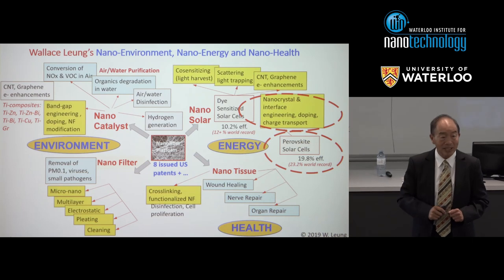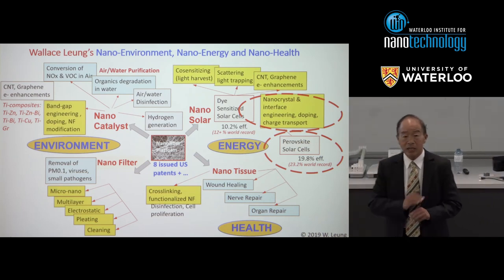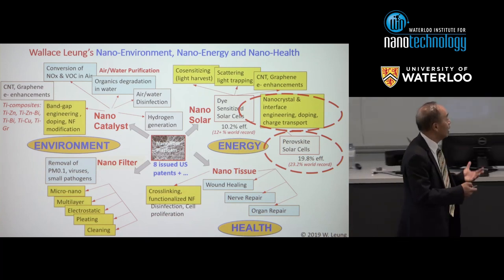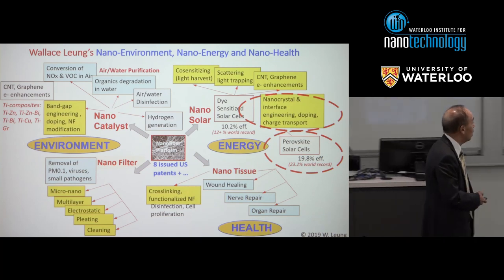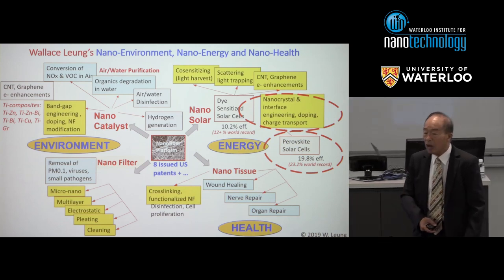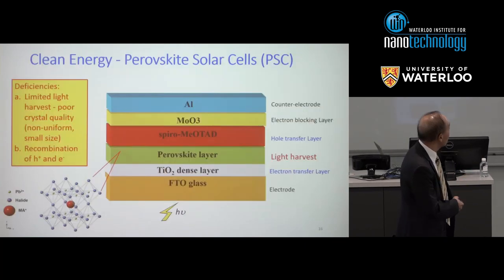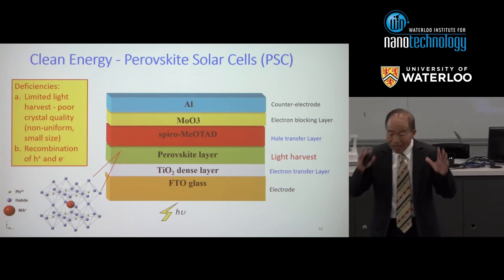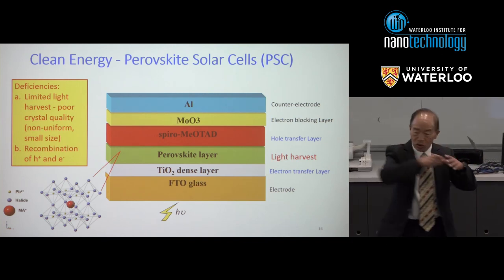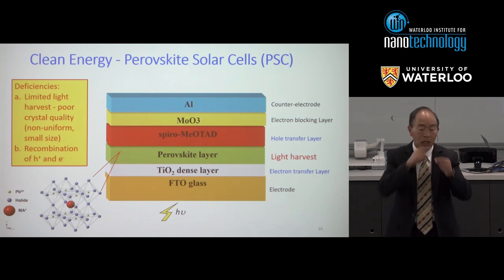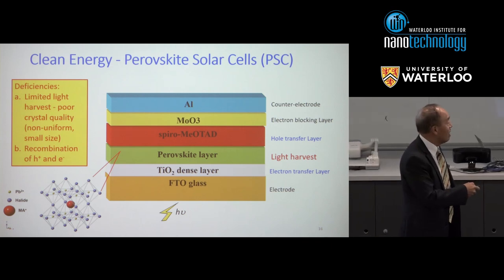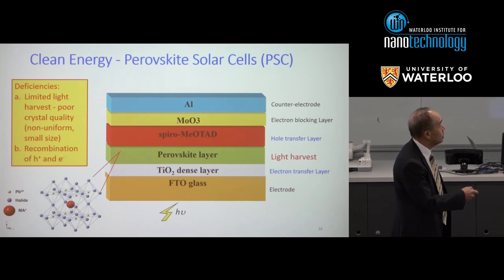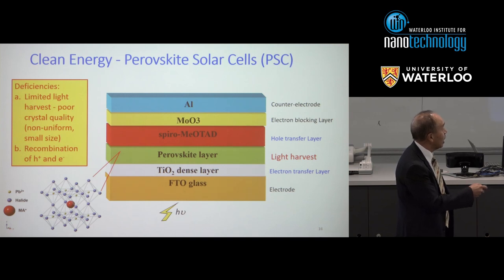Let's move on to the perovskite solar cell. In the past five years it has been the most actively worked on because it has very high performance — today about 22%, and in tandem arrangement up to 24%, competing with amorphous silicon. The perovskite itself is complicated: it has a methyl ammonium organic component plus an octahedral structure with lead and six halide atoms (chloride, bromide, iodide). It's extremely effective at harvesting light. The perovskite layer is sandwiched between an electron transport layer, hole transport layer, and electrodes.